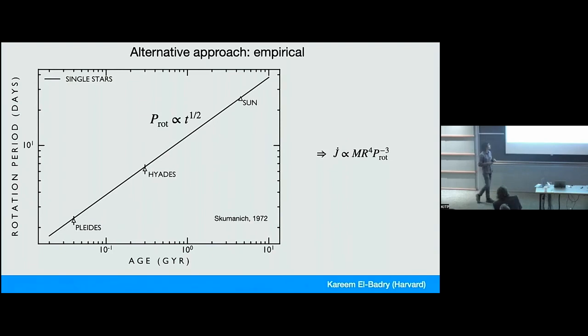So if you take this Skumanich relation, this is empirically found that the rotation period goes as about t to the one-half. And so if you say, I want to know what angular momentum loss it takes to reproduce this, you say angular momentum is just I omega, and I is mr squared, you have a differential equation, and there's a few lines of algebra you can solve for what J dot you need. And you've got a magnetic braking torque that's m r to the fourth P to the minus three.